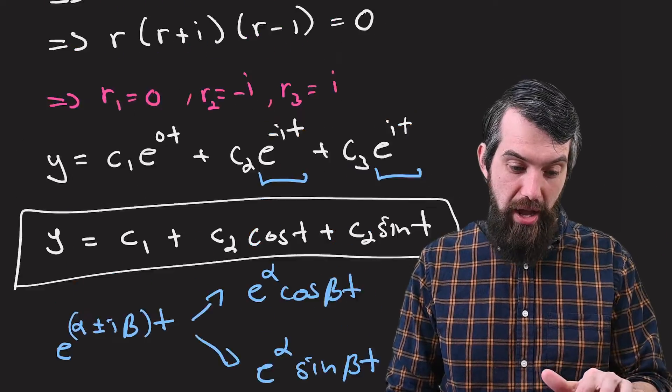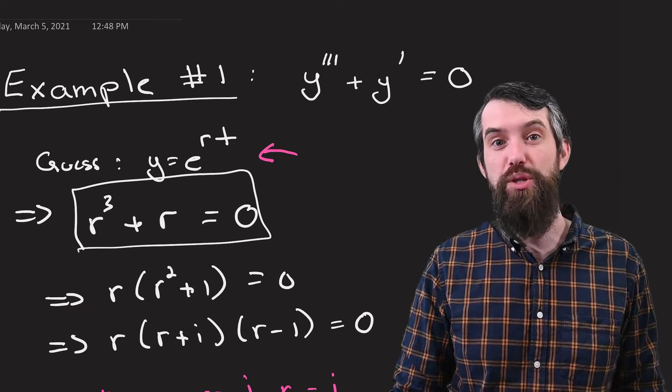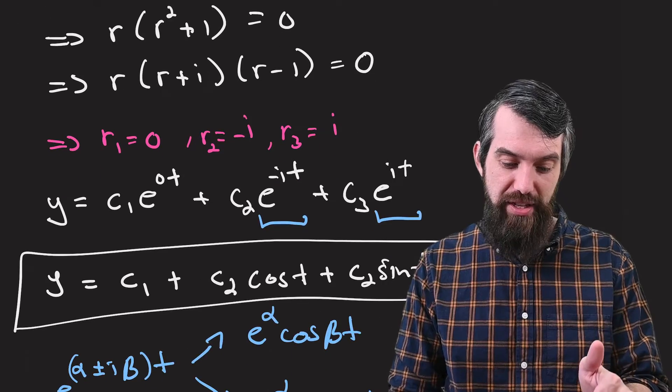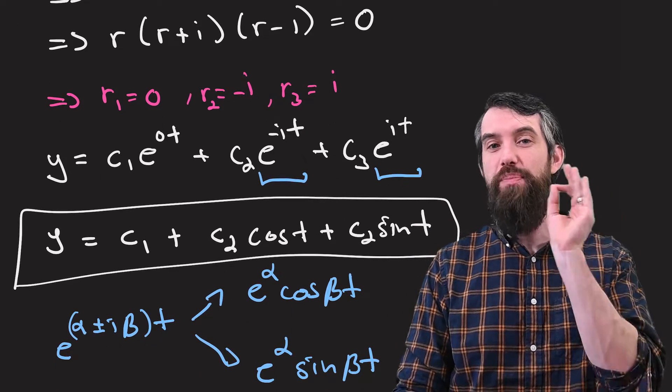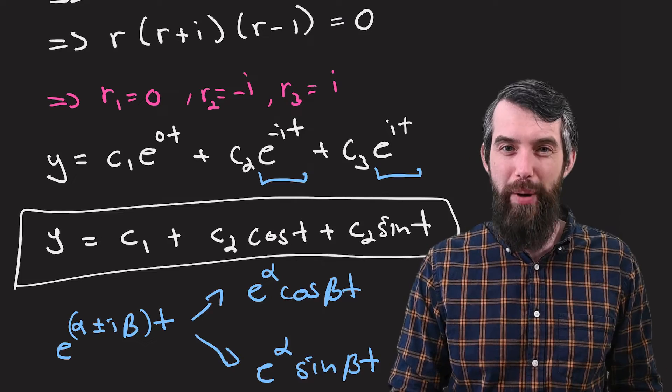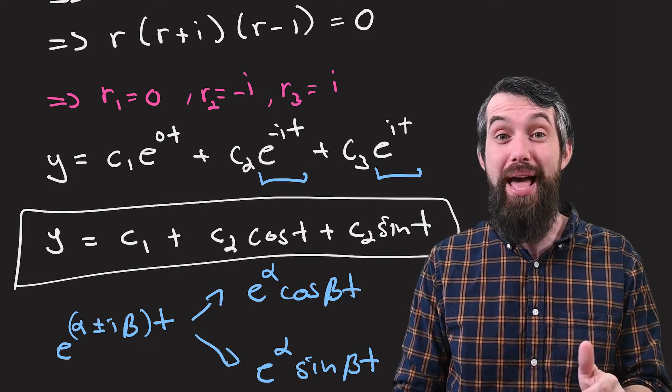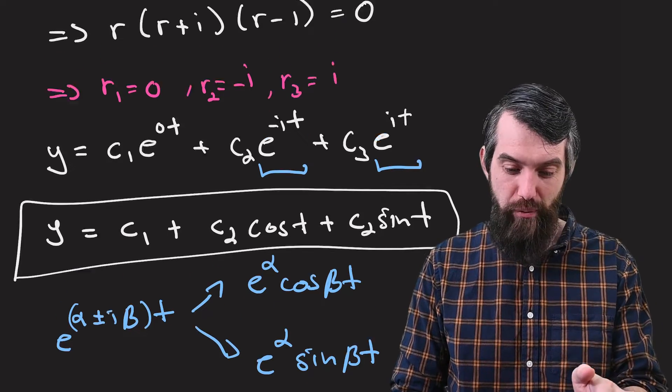So what have we done? For our original differential equation, y triple prime plus y prime equals 0, we now have this general solution, c1 plus c2 cosine t plus c3 sine t. So that was one. Let's do one more example to lock in what happens when you have multiple types of repetitions.